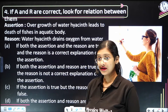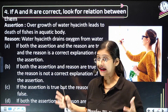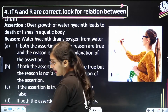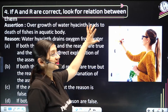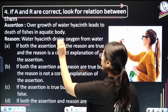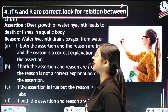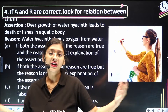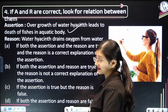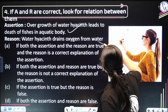First read these two statements independently. Now, if you feel the assertion is correct — that overgrowth of water hyacinth leads to death of fishes in the aquatic body — yes, that is a correct statement. And if both statements are correct, the reason also says water hyacinth drains oxygen from water, which is true.